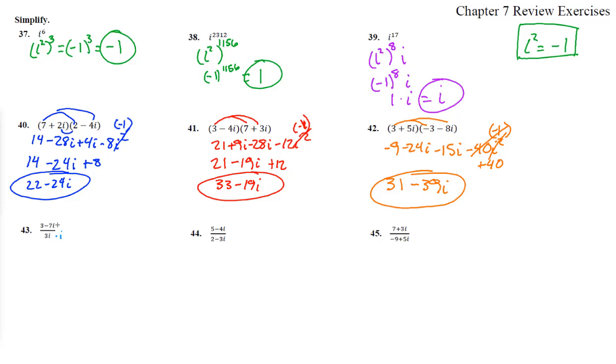It's the square root of negative 1. We're timesing by that to allow it to escape the imaginary world. On the top, we get 3i minus 7i squared over 3i squared. What is i squared? Negative 1.